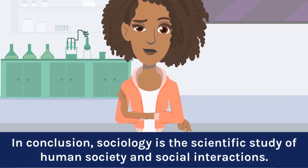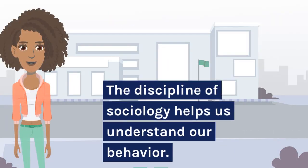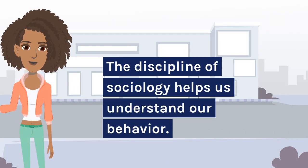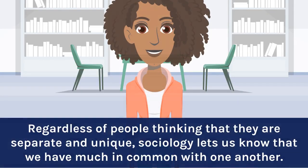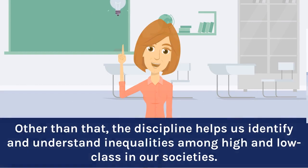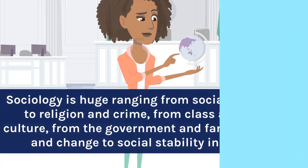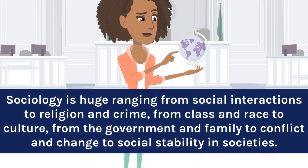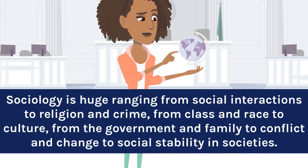In conclusion, sociology is the scientific study of human society and social interactions. The discipline of sociology helps us understand our behavior. Regardless of people thinking that they are separate and unique, sociology lets us know that we have much in common with one another. The discipline also helps us identify and understand inequalities among high and low class in our societies. Sociology is vast, ranging from social interactions to religion and crime, from class and race to culture, from the government and family to conflict and change to social stability in societies.